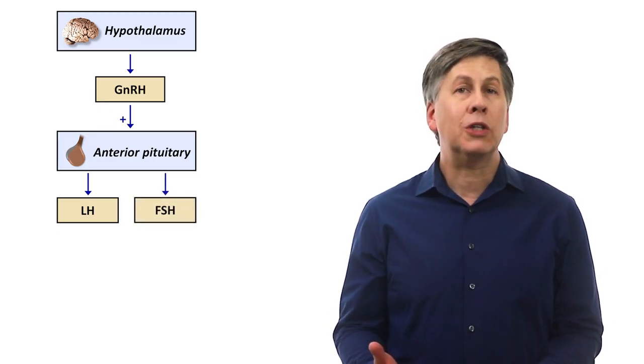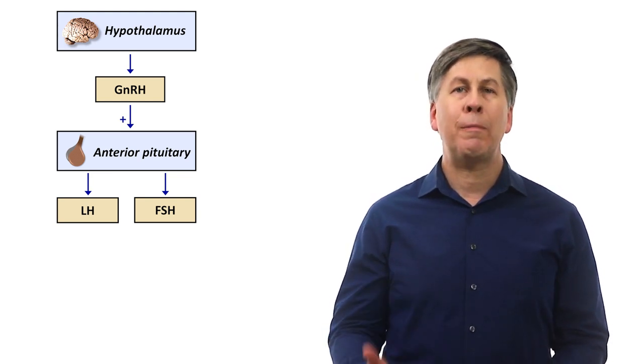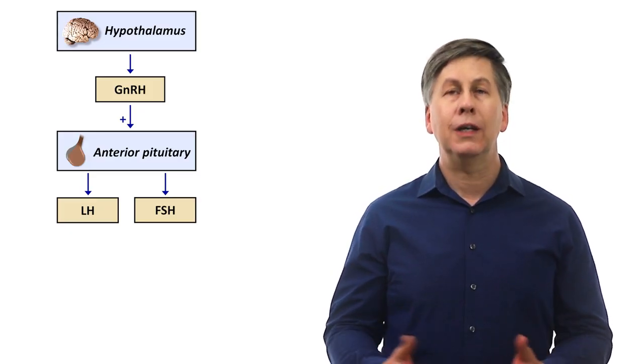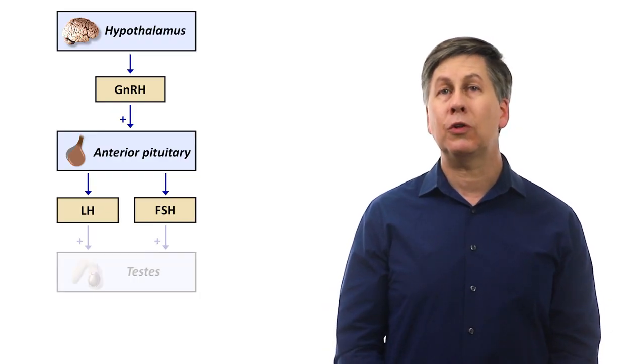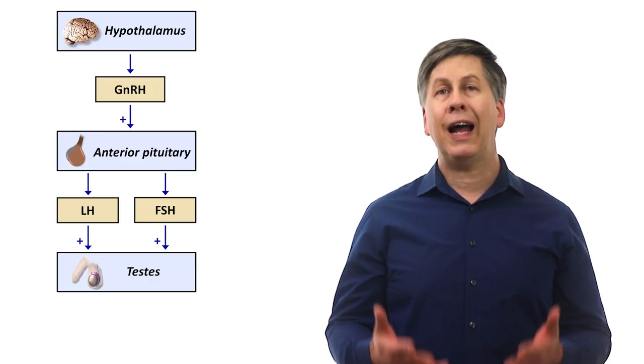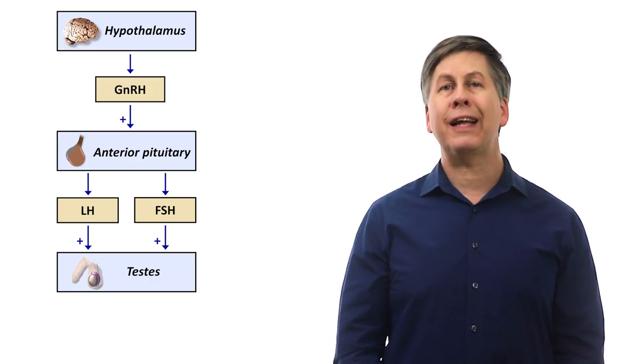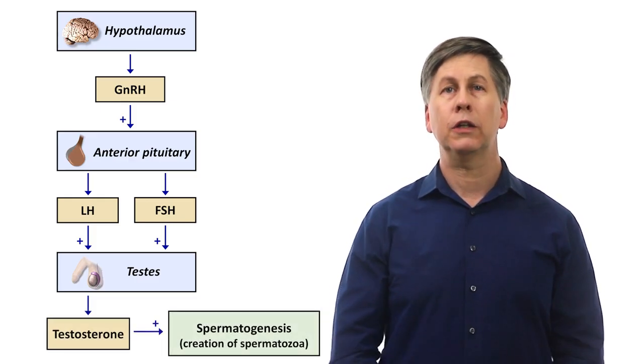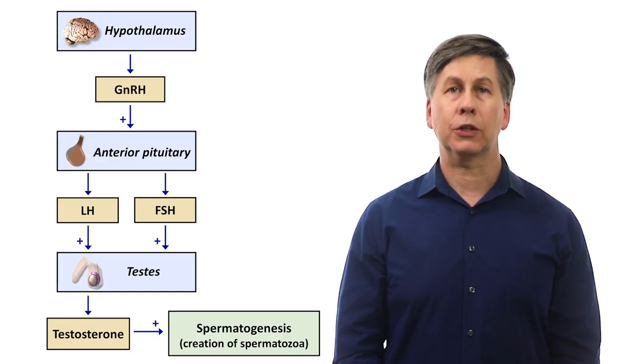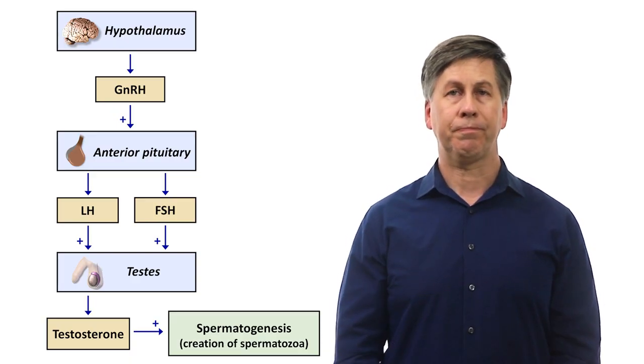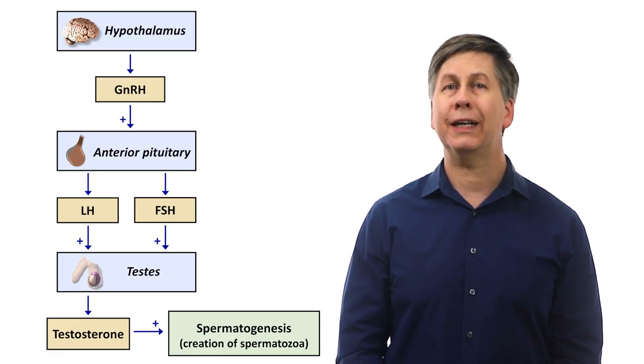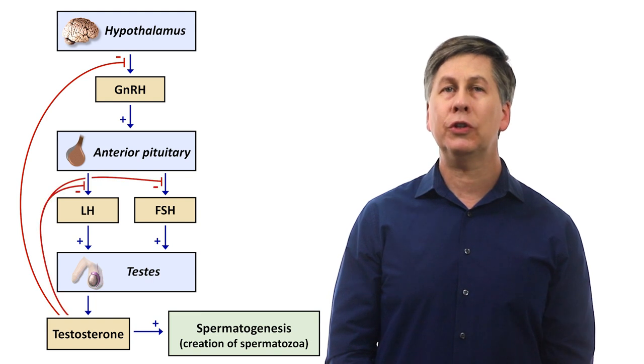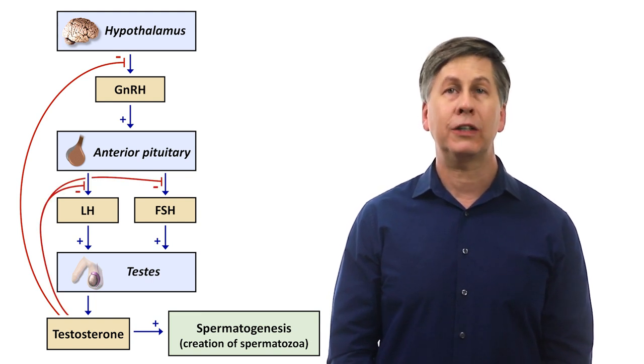If you're wondering about those names, these hormones are named for their functions in the female reproductive system, but they are the same molecules as in males, in whom they travel via the bloodstream to the testes. In the testes, LH specifically stimulates the production of testosterone. Testosterone in turn stimulates the process of spermatogenesis, which is the creation of sperm cells, themselves also known as spermatozoa. Testosterone also displays negative feedback in which it inhibits the hypothalamus and anterior pituitary from releasing GNRH and LH and FSH respectively.